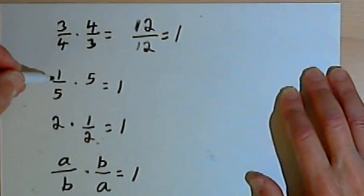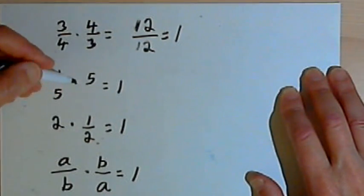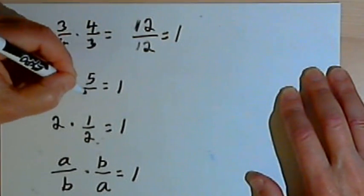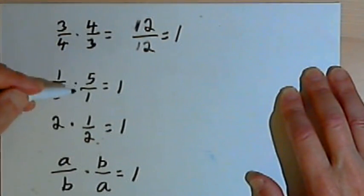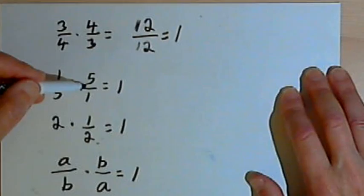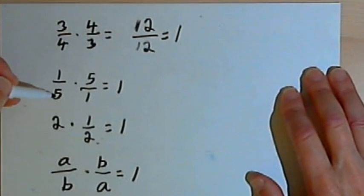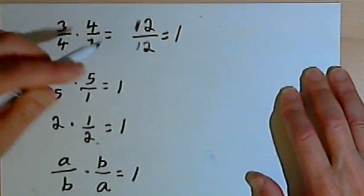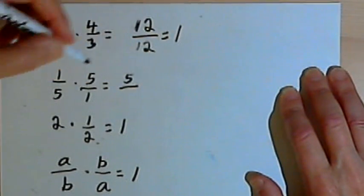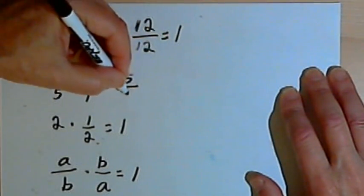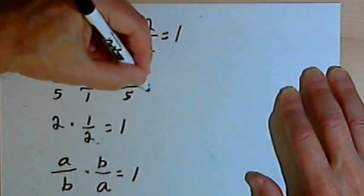The same thing happens when I have 1 over 5 times 5. That's really 1 over 5 times 5 over 1. So 5 over 1 is the multiplicative inverse, or reciprocal, of 1 over 5. When I multiply them out, I'm going to get 1 times 5 is 5, and 5 times 1 is 5. So that's 5 over 5, and that equals 1.